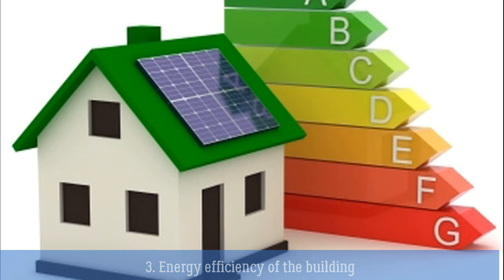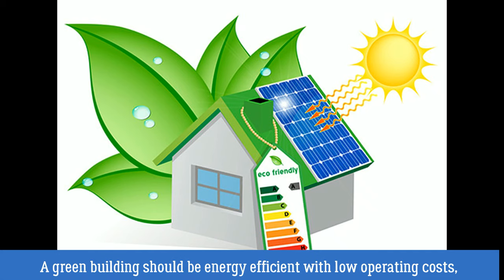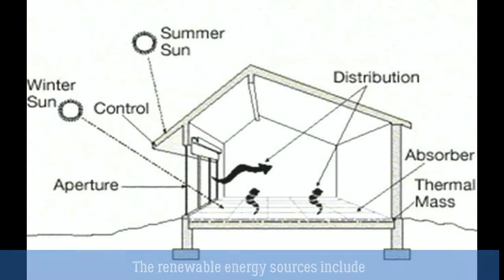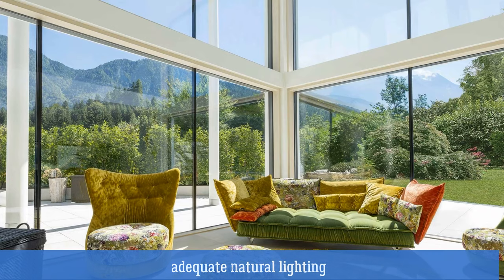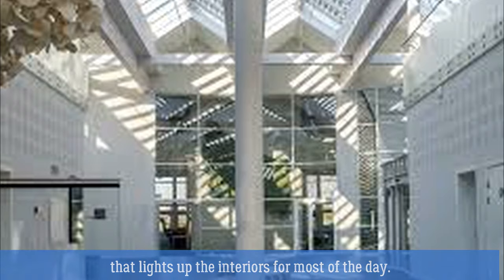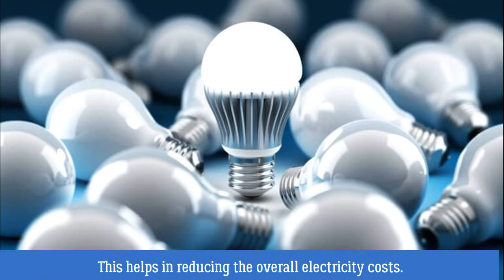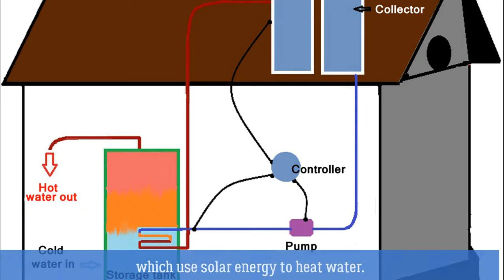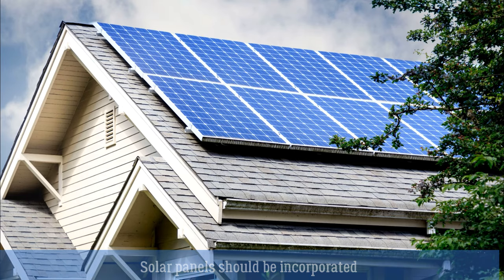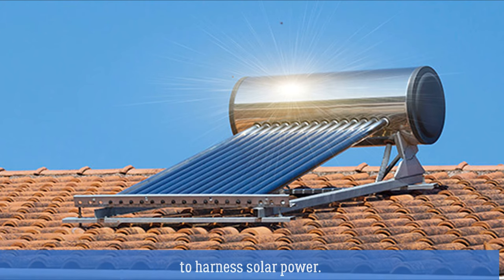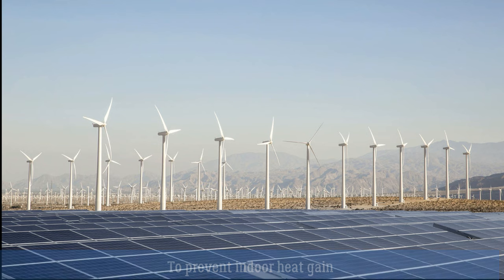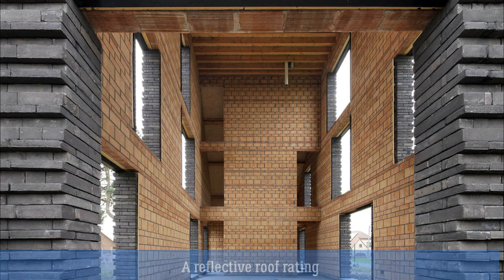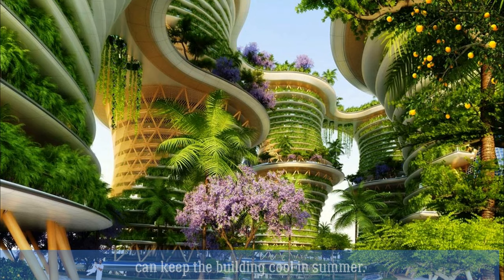Energy efficiency of the building: a green building should be energy efficient with low operating costs, air conditioning costs, and overall maintenance costs. Renewable energy sources include adequate natural lighting that lights up the interiors for most of the day, helping to reduce overall electricity costs. It is essential to install solar heaters which use solar energy to heat water, and solar panels should be incorporated within the roof to harness solar power. To prevent indoor heat gain, the building should be insulated using hollow bricks, a reflective roof coating, or a roof garden to keep the building cool in summer.